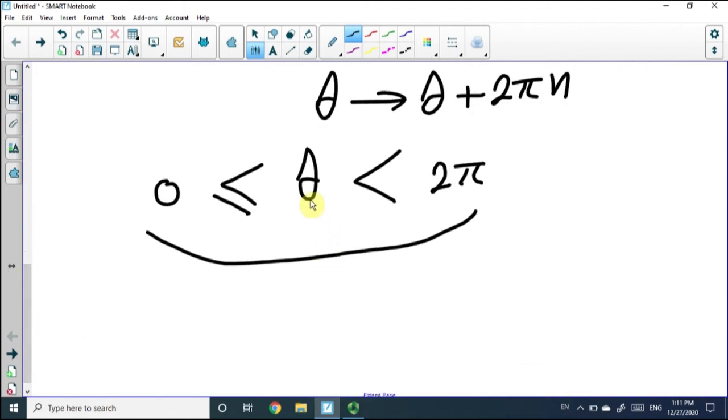Of course, we don't have to choose exactly this range of theta. I could, for example, choose theta between negative pi to pi, and I could put the equal sign here. That's also possible. Anyway, the point is, we have to restrict theta in the range of two pi. That's the first issue.